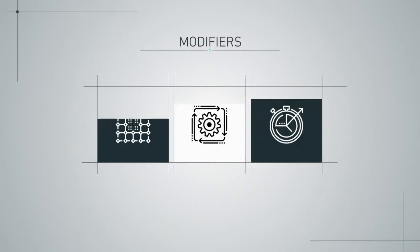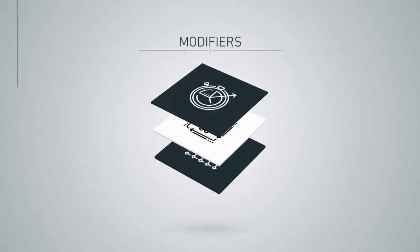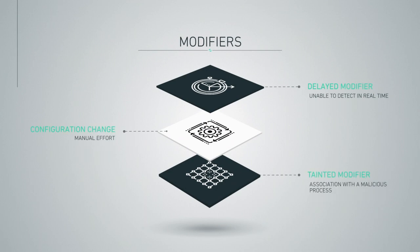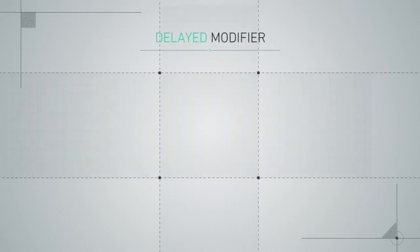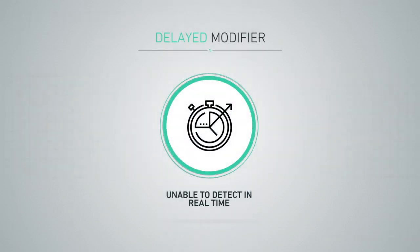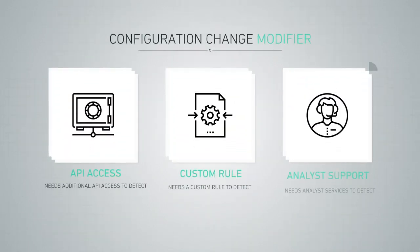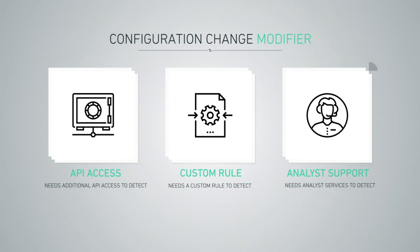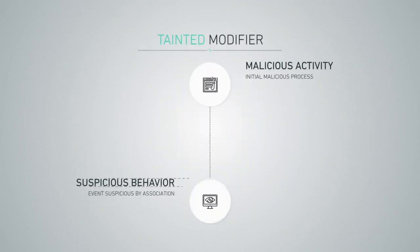Each one of these detection types can be assigned to any of the following modifiers, depending on how the product detected the malicious activity. If the product is not able to detect malicious activity in real-time or near real-time, it is given a delayed modifier. If the product is not able to detect malicious activity without a configuration change, it is given a configuration change modifier. If the product determines an activity is malicious by association — as in it is highly suspicious due to its association with a confirmed malicious activity — it is given a tainted modifier. These associations are often beneficial to a security team.